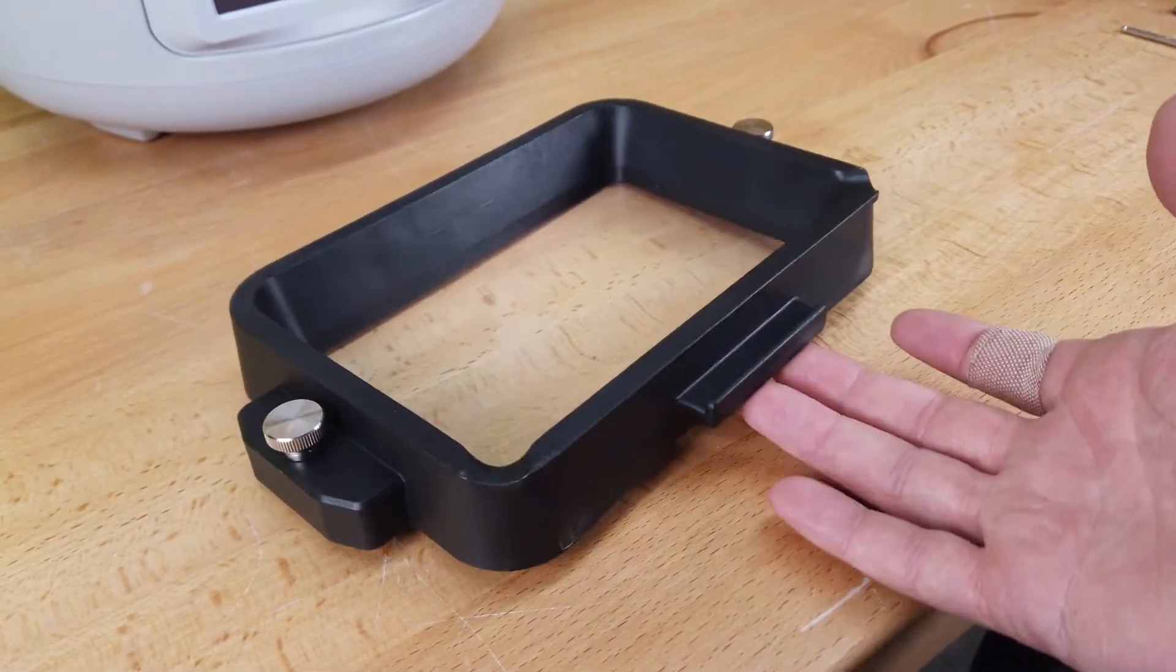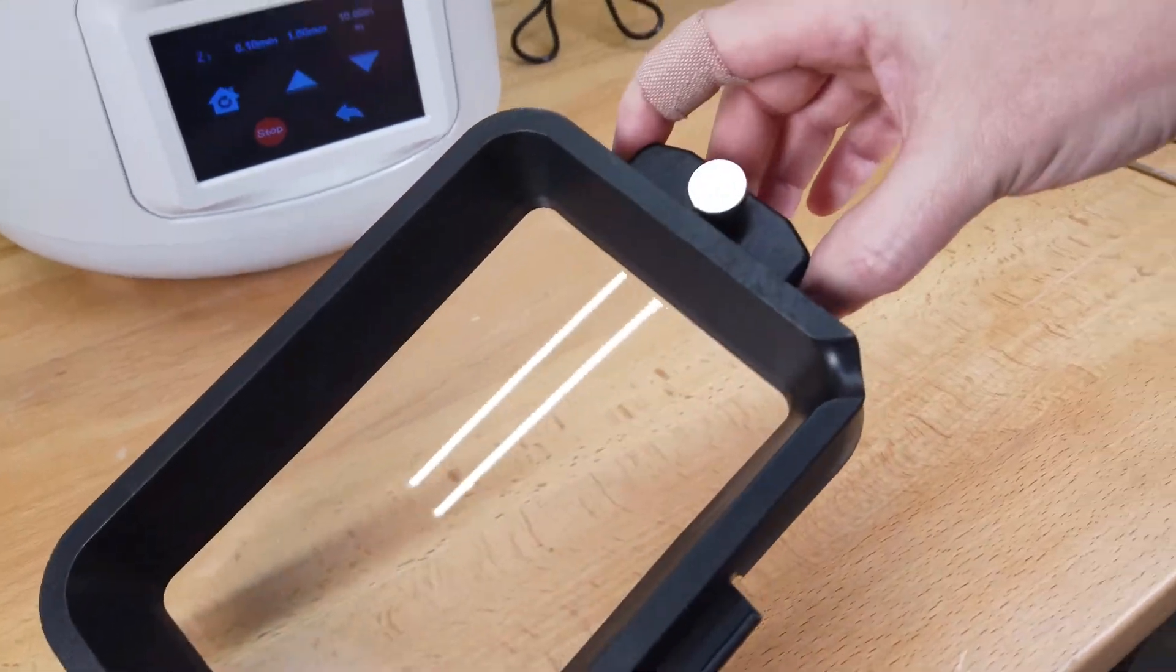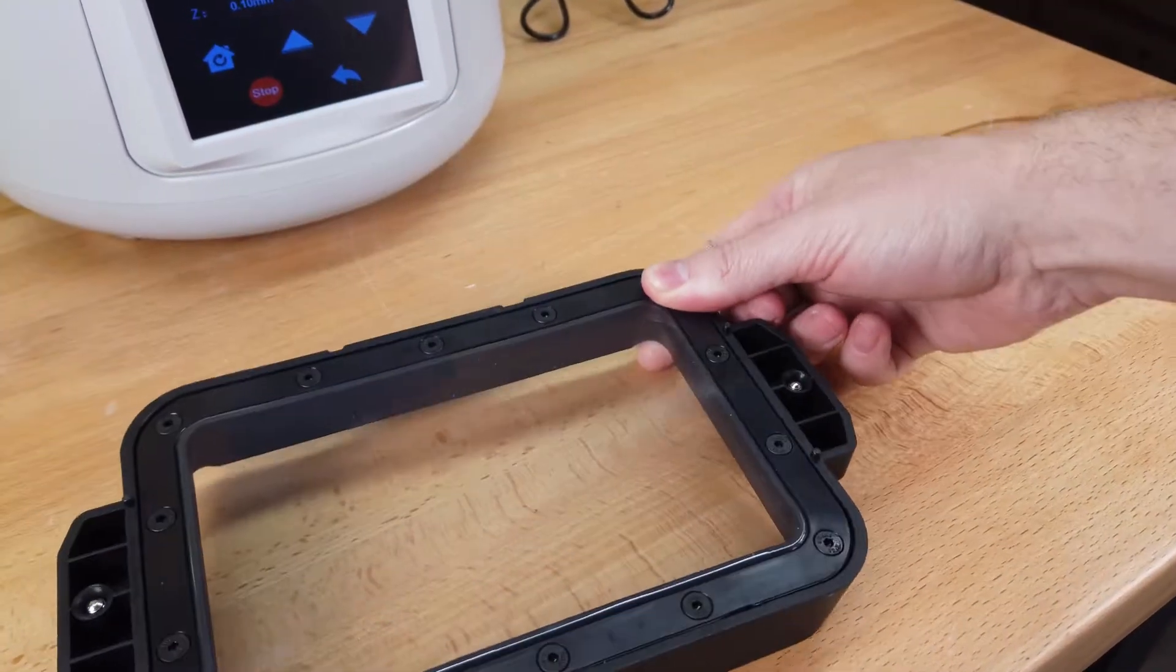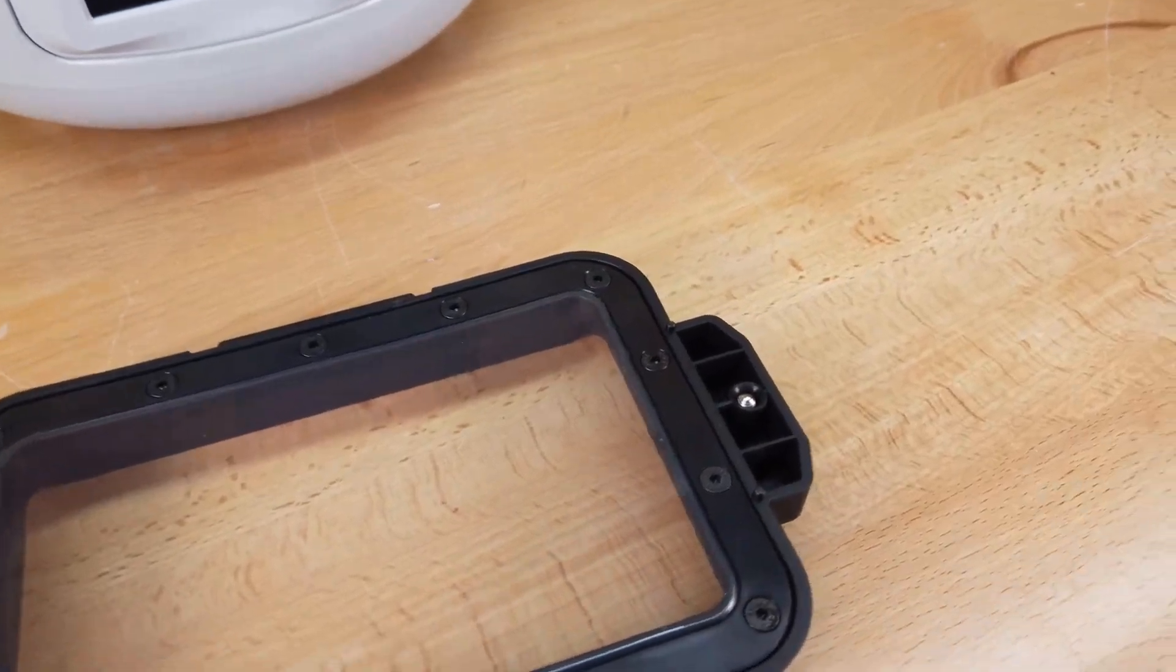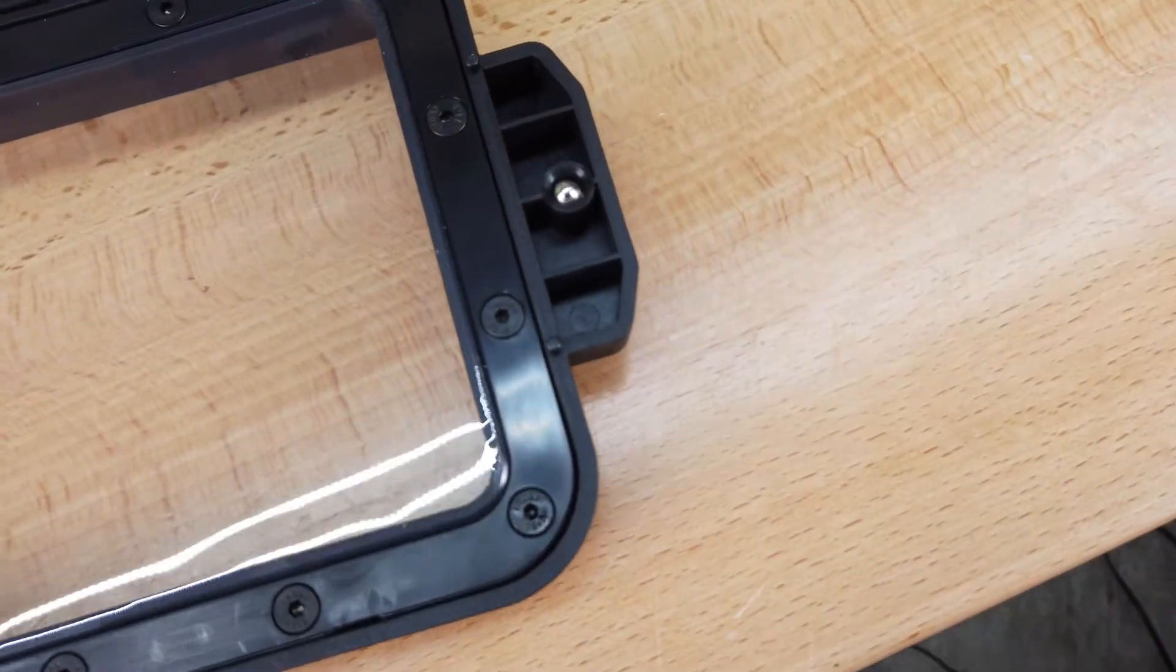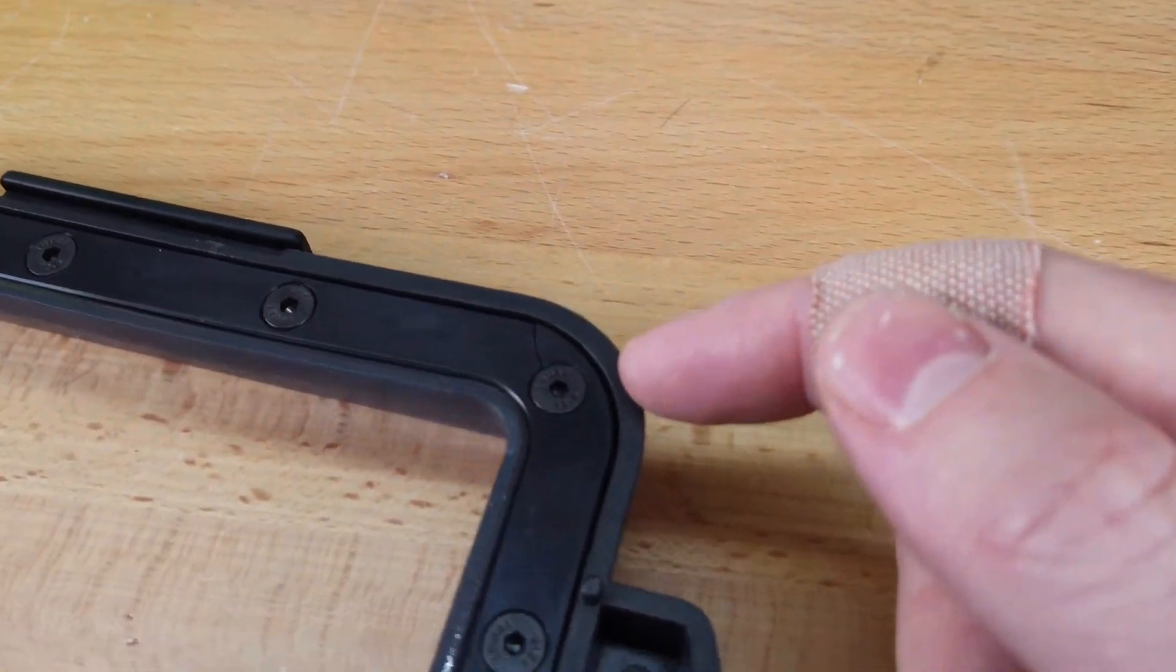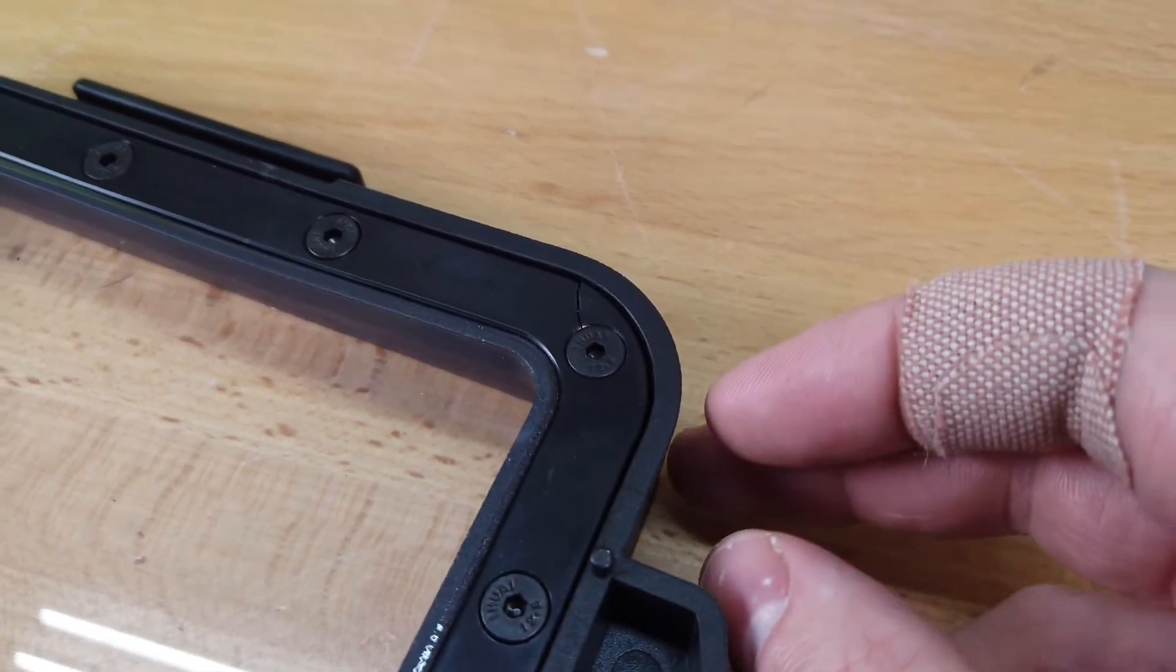The vat on this printer is a nice thick plastic. A lot of times these are aluminum, but plastic works fine. But if we look on the bottom side, there's a little bit of a problem where the FEP sheet is bolted down. There's two cracks on either corner. I don't think this is going to cause a problem, but it's not a good look at the same time.